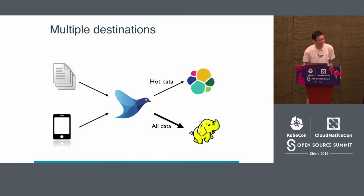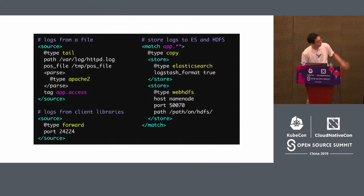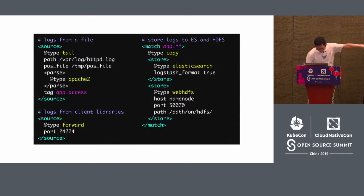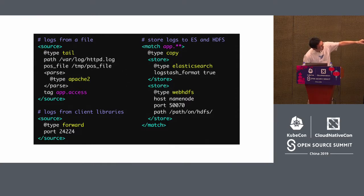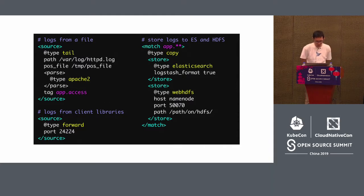Sometimes we want to send data to multiple destinations. Fluentd supports this use case with the copy plugin. You can wrap multiple output plugins with the copy plugin — in this example, data matching the tag prefix pattern is stored in Elasticsearch and HDFS at the same time. If you want to add more destinations, just add more store sections inside the copy plugin.